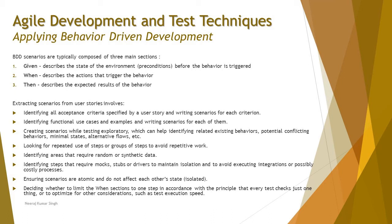Given describes the state of the environment, prerequisites, or preconditions which will trigger the behavior. When describes the action that triggers the behavior. Then describes the expected outcome of the behavior. So: given something, when this happens on the product, then this is the output. Extracting scenarios is a challenging job in behavior-driven development because the entire approach depends on how well you extract the scenarios from the user stories. That is why we involve testers, developers, and business representatives — a lot of input and review is required to make more efficient tests.